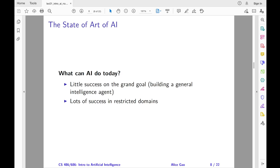Arguably, the grand goal of artificial intelligence is to build a general intelligence agent. If I were to summarize the state of art of AI, I would say the following: There hasn't been much success towards this grand goal.